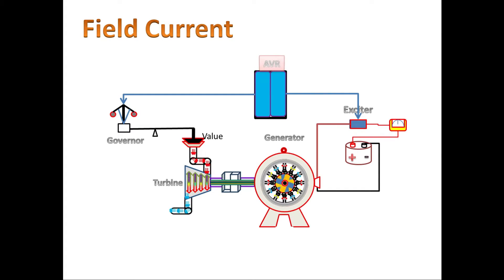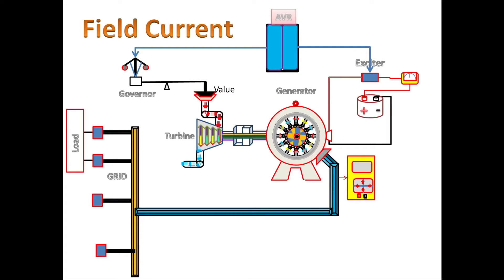Second method is by measuring reactive power of the generator, we can able to detect the loss of field production. During normal running condition, the VAR is exported from the generator, but mainly during under excitation problem, the VAR is imported from the grid to generator.